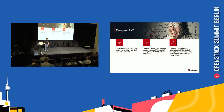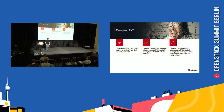A couple of actual examples I've been asked in the past: somebody asking 'How do I forward my SSH key into an instance?' instead of asking 'How do I SSH into an instance?' And lastly, 'How do I set persistent iptables rules?' instead of asking 'Why isn't my machine receiving a lease from the DHCP server?'